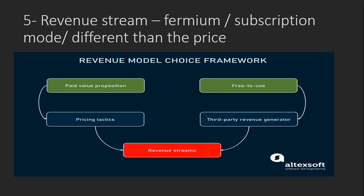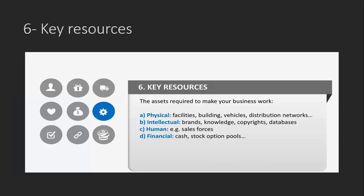Paid value proposition is very important. Here you may get third-party revenue generators. So you design your revenue stream and choose your revenue model. After that, we have to list all the key resources. The key resources are the assets required to make your business work — maybe physical: facilities, buildings, vehicles, distribution network; maybe intellectual: branding, copyrights, or patents.